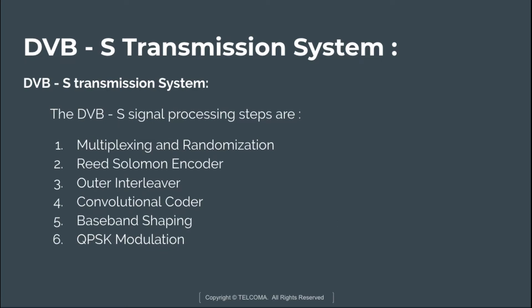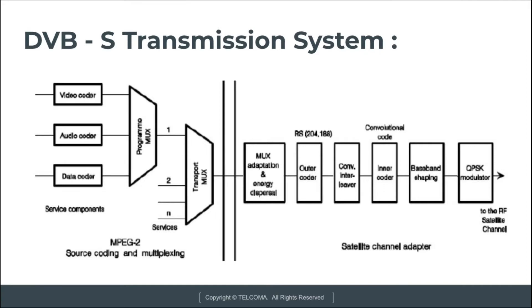The DVB-S signal processing steps are: multiplexing and randomization, then Reed Solomon encoding, then the outer interleaver, then convolutional coding, baseband shaping, and finally QPSK modulation. When the system codes the signal according to the MPEG-2 standard, it passes through these steps. As shown in the diagram, it starts with the video coder, audio coder, and data coder, which select and pass signals through the program multiplexer.